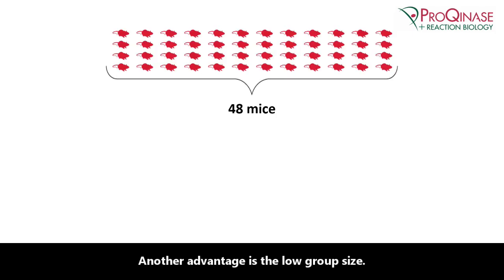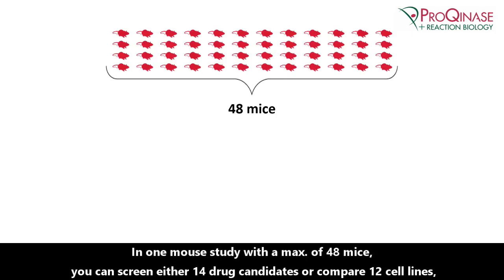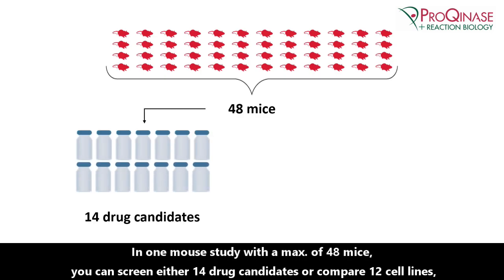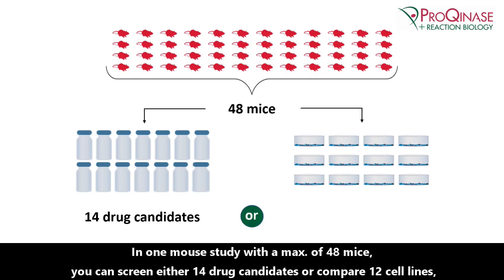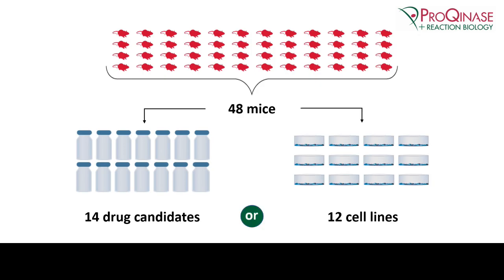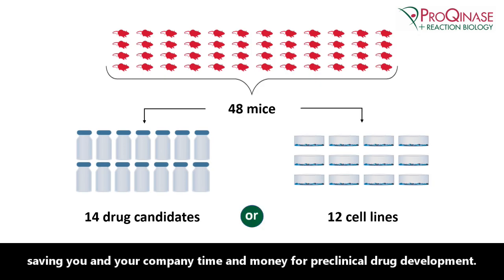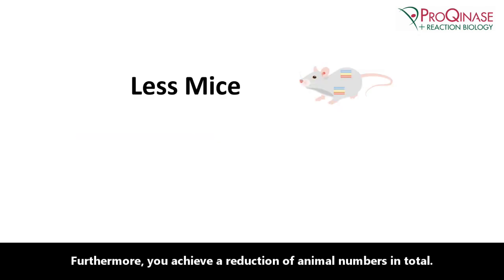Another advantage is the low group size. In one mouse study with a maximum of 48 mice, you can screen either 14 drug candidates or compare 12 cell lines, saving you and your company time and money for preclinical drug development. Furthermore, you achieve a reduction of animal numbers in total.